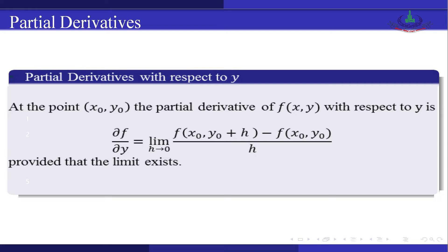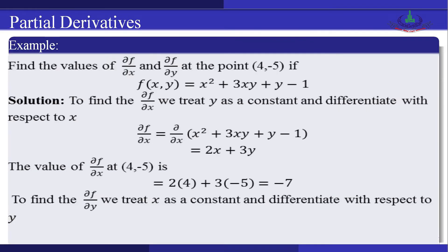Now we look at an example. Find the values of ∂f/∂x and ∂f/∂y at the point (4, −5) if f(x, y) = x² + 3xy + y − 1. To find ∂f/∂x, we treat y as a constant and differentiate the given function with respect to the variable x.